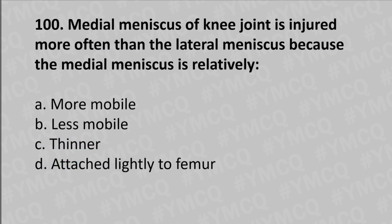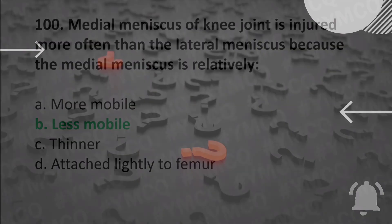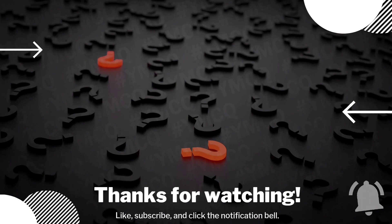Moving to our 100th question: the medial meniscus of the knee joint is injured more often than the lateral meniscus because the medial meniscus is relatively option A more mobile, option B less mobile, option C thinner, option D attached lightly to the femur. The answer is option B, less mobile.